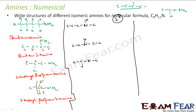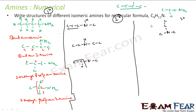For the tertiary amine, the nitrogen has no hydrogen — one carbon here, one carbon here, and two carbons on the third branch, making four carbons total. That is the only possibility for the tertiary amine. With two carbons there is one possibility, three carbons gives two possibilities, and four carbons in the primary series gave four possibilities.